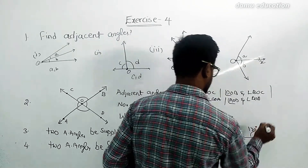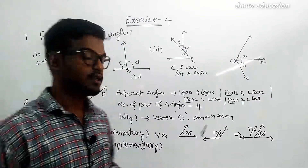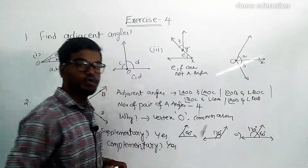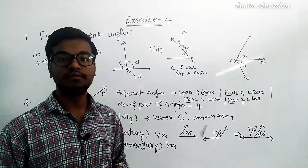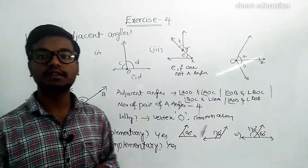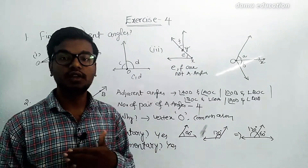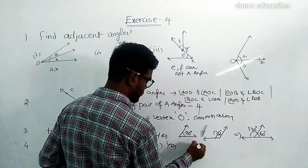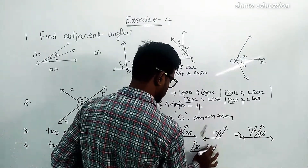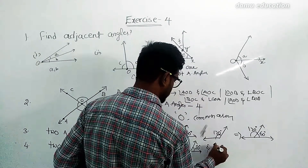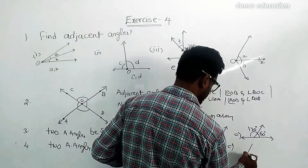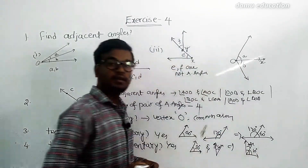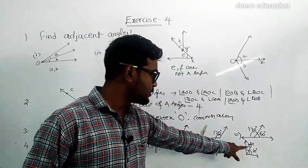Can two adjacent angles frame complementary angles? Yes, obviously. Complementary angles are two angles whose sum equals 90 degrees. For example, take 50 degrees and 40 degrees — their sum is 90 degrees, so they form complementary angles.